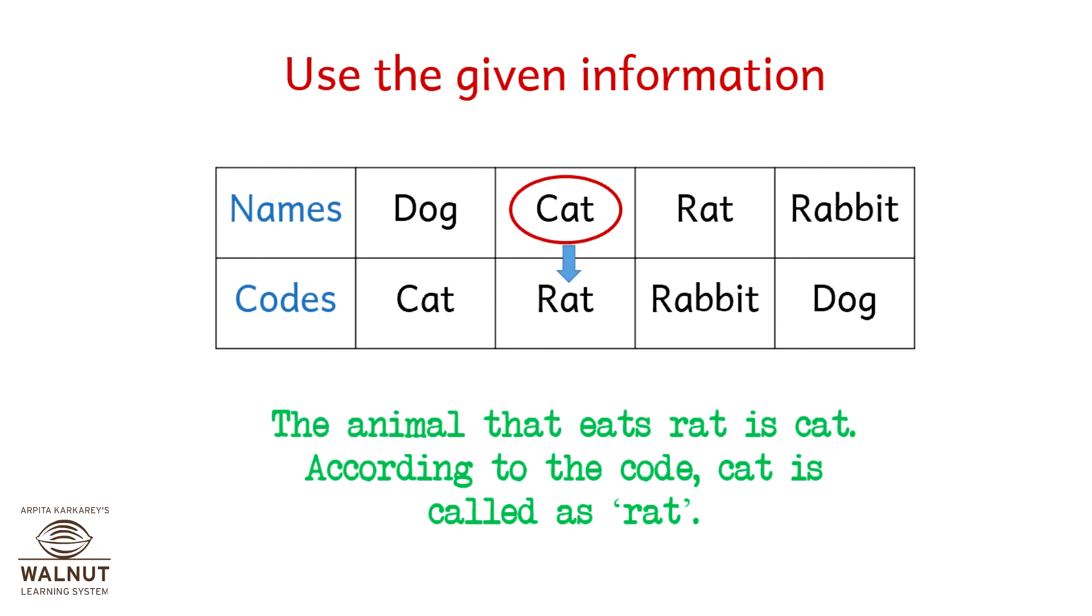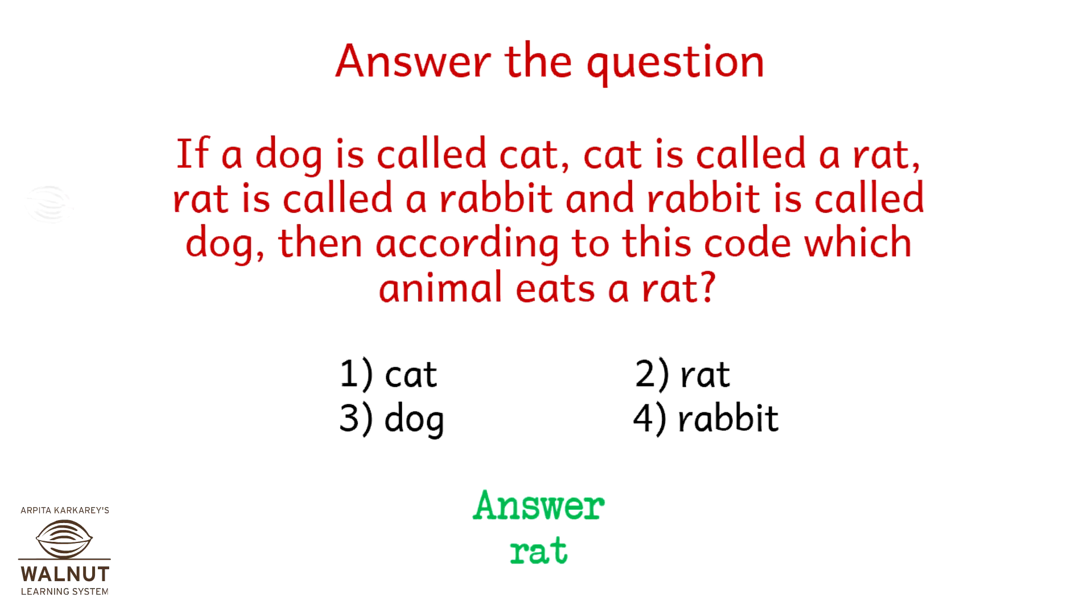The animal that eats rat is the cat. According to the code, the cat is called as rat. So the correct answer is option number 2, rat.